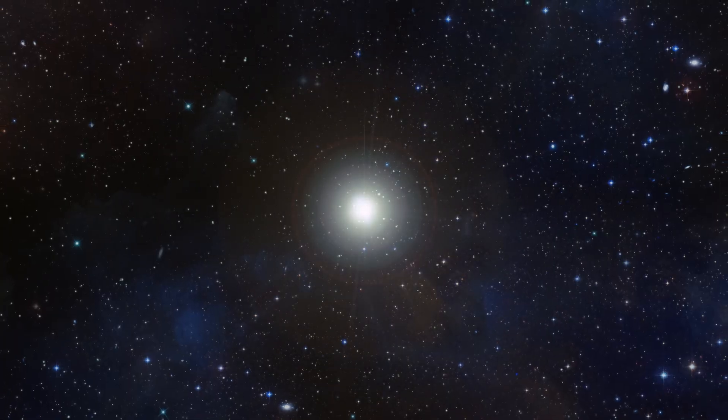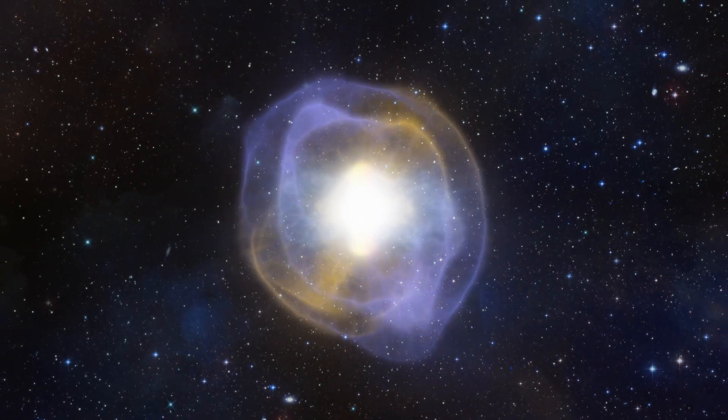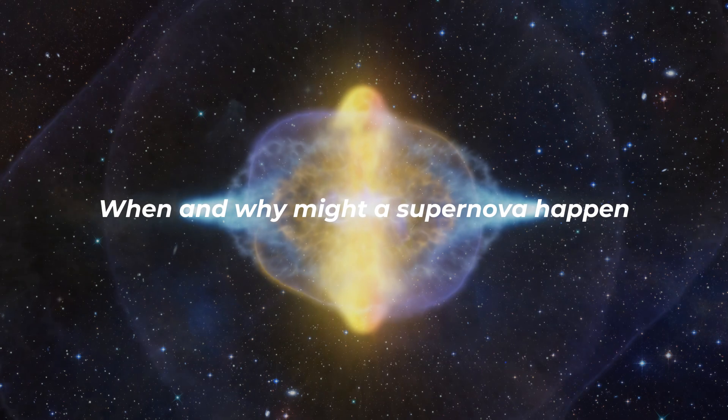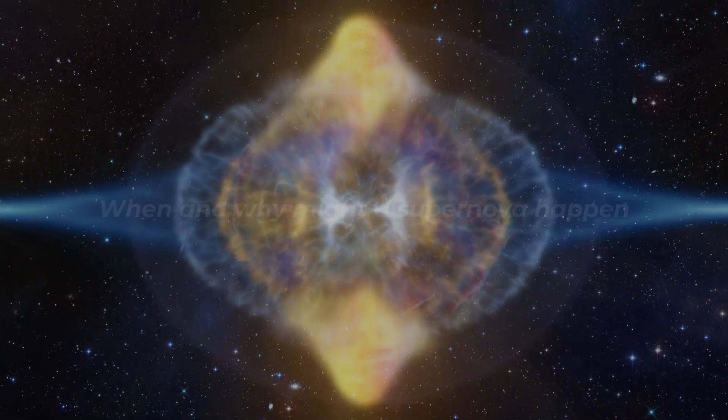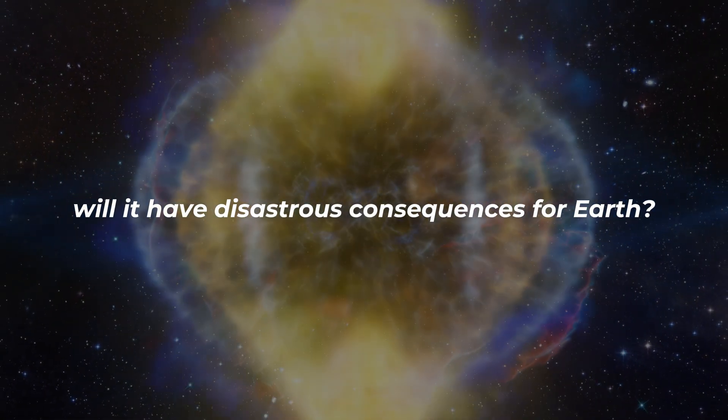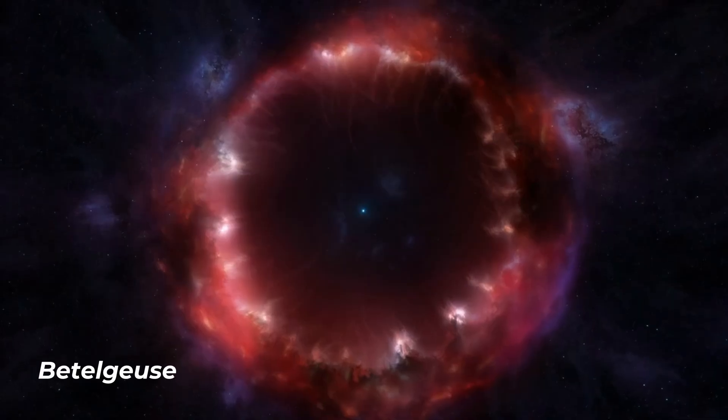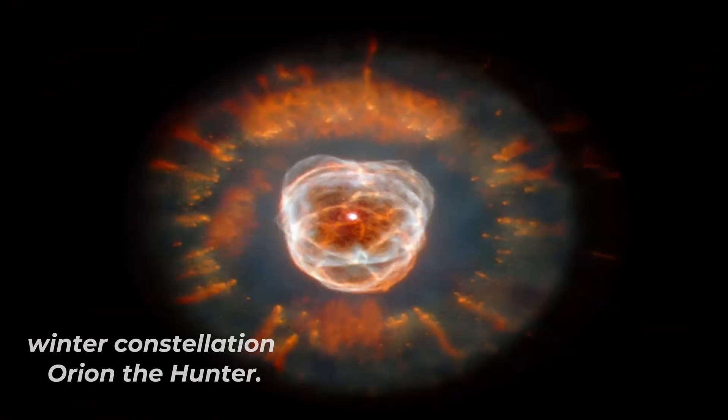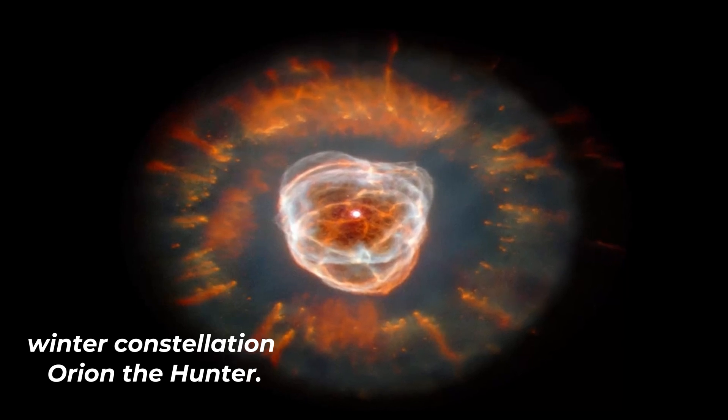This star is about to blow up as its life cycle comes to an end. When and why might a supernova happen? And will it have disastrous consequences for Earth? Let's look into it. The brilliant ruby red star, Betelgeuse, is located in the upper right shoulder of the winter constellation Orion, the Hunter.